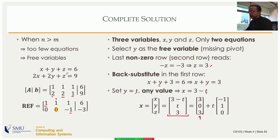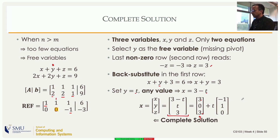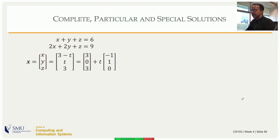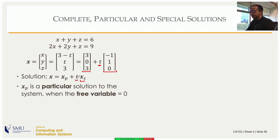The first vector (3, 0, 3) is a solution when the free variable y is set to zero — it satisfies both equations. The second vector (−1, 1, 0) can be scaled by any scalar t and added to the first. Any scaled version of the special solution added to the particular solution is still a valid solution — that is the freedom introduced by having a free variable. So the complete solution is the particular solution xp plus a scaled special solution.